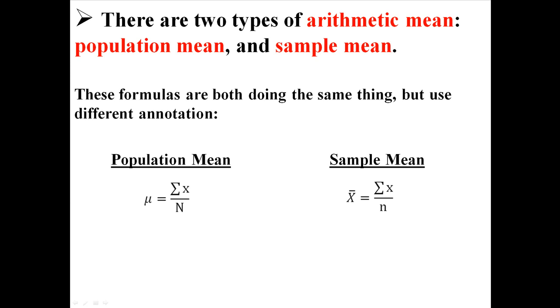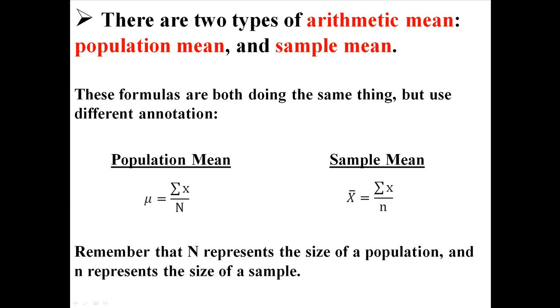The formulas are both doing the same thing but they use different annotations. You're adding together all the X's—that little e looking thing next to the X means the sum of, it's called sigma—the sum of all X divided by the number of X's you have. Capital N represents the size of a population and lowercase n represents the size of a sample.